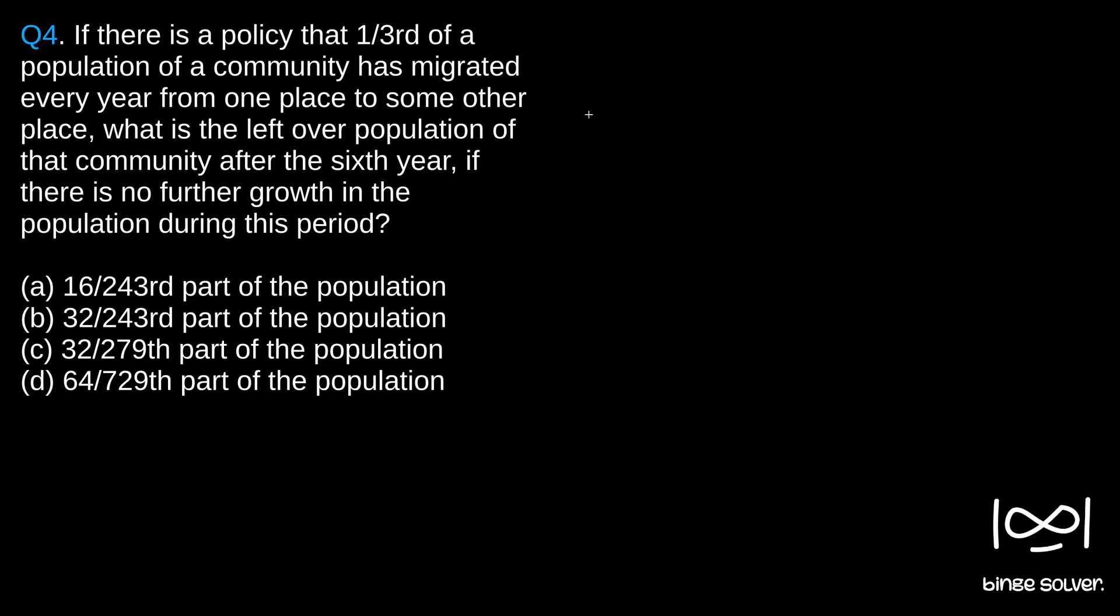So this is just like how we do compound interest. If we assume that the initial population was 1, then we'll get the answer as 1 into 1 minus 1/3 (population is reducing) raised to 6, or we have 2/3 raised to 6.